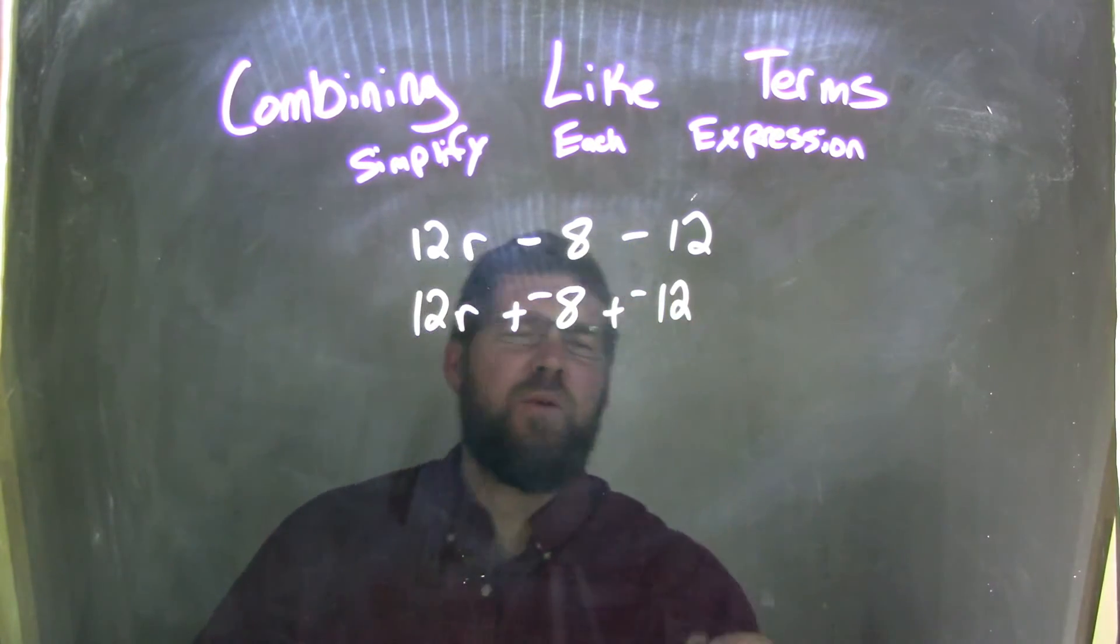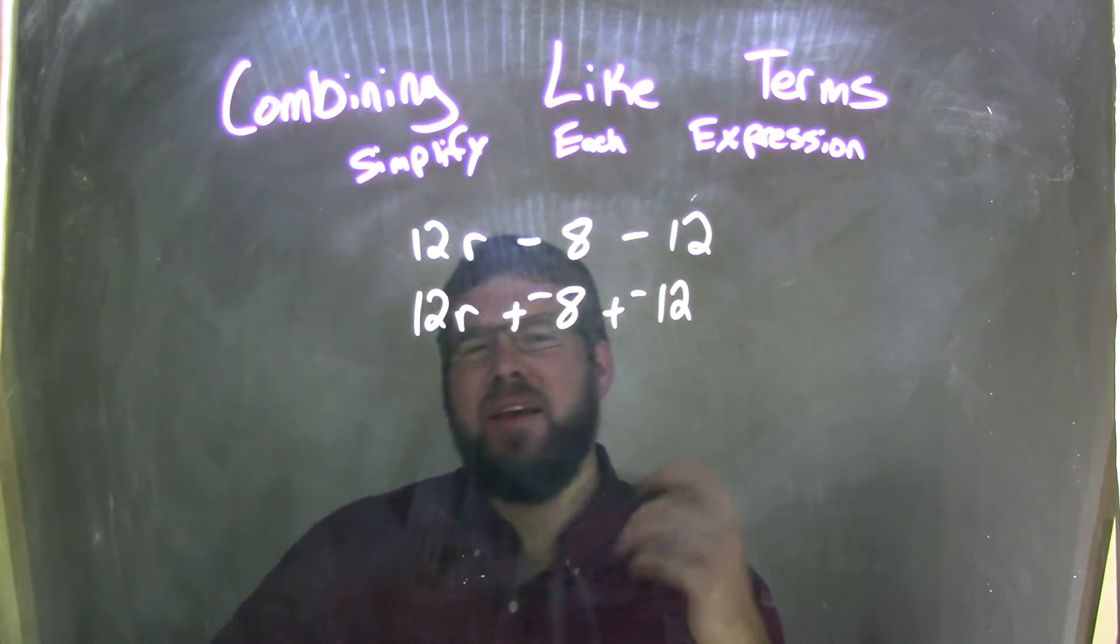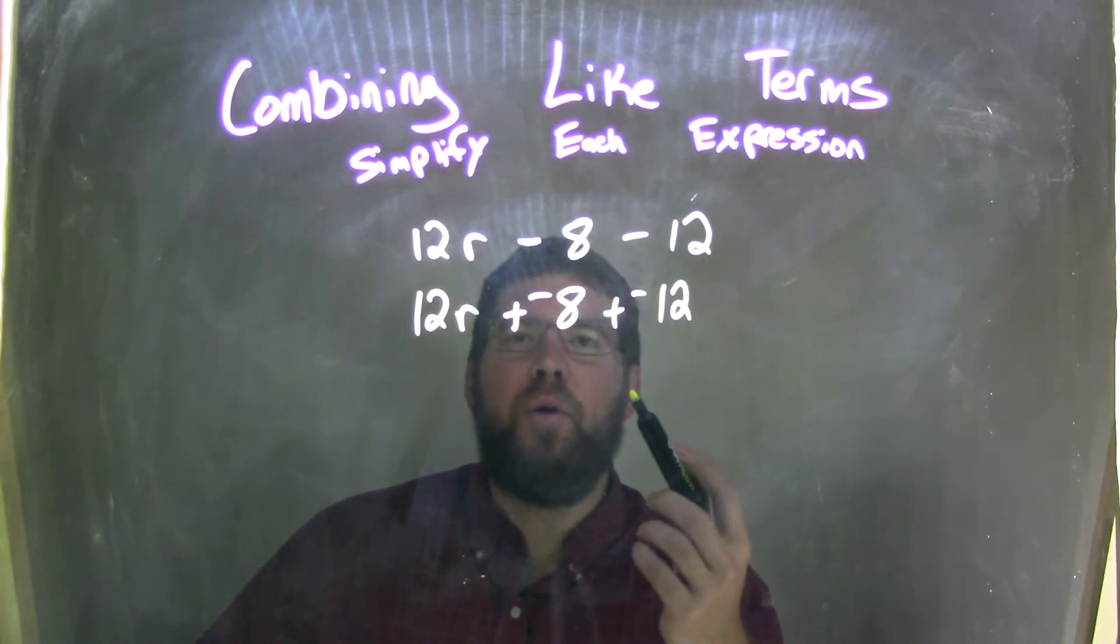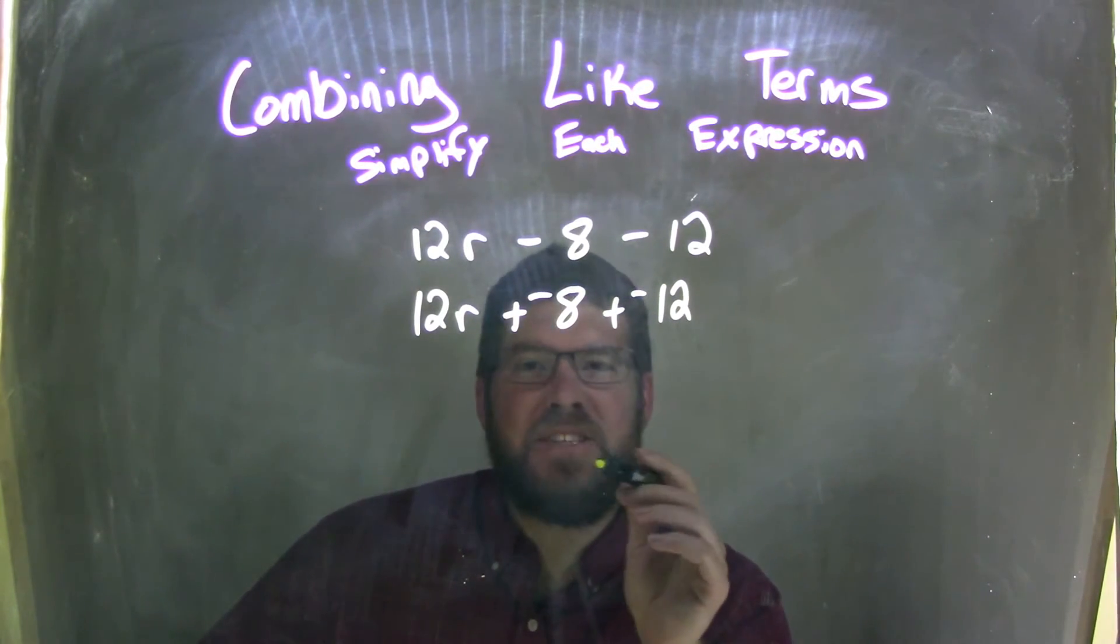Because before, I had negative 8 and minus 12. Well, is it 8 minus 12, then a negative? How do you do that? So, we have plus a negative. It's much easier to see.